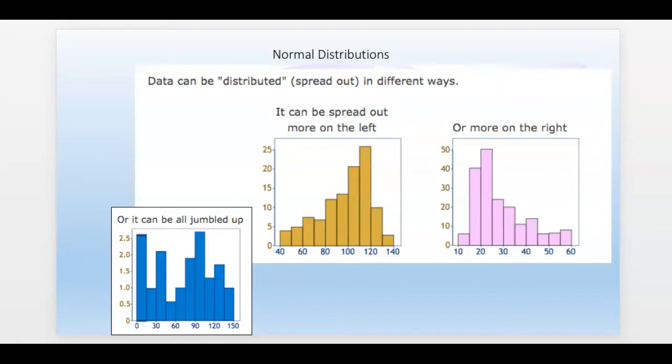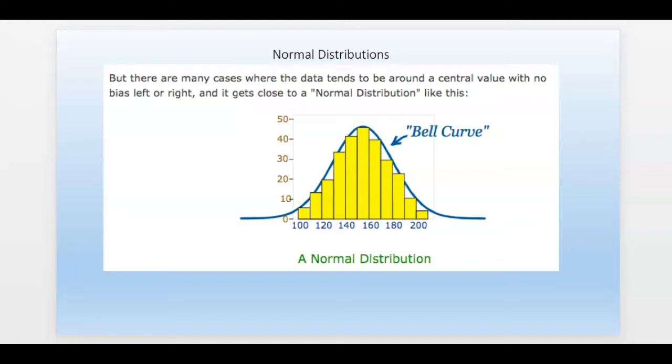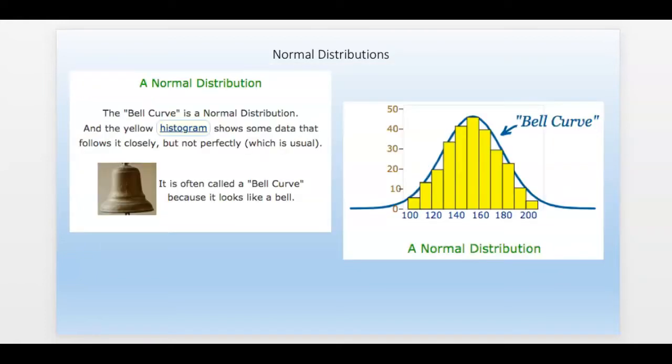Again data, it can be distributed in different ways. It can be spread out, more on the left, more on the right, can be all jumbled up. But there are many cases where data tends to be around some central value. There really is no left or right bias. We call that a normal distribution or a bell shaped curve. We call it a bell because it kind of looks like a bell, like the Liberty Bell.